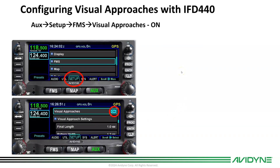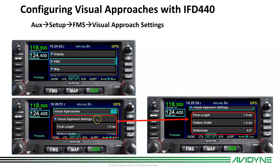To configure visual approaches, go into the AUX page setup tab, scroll down to FMS Settings, expand that out, and make sure visual approaches is set to on. Under Visual Approach Settings, expand that down and you can adjust the final length, pattern width, and glide slope angle.